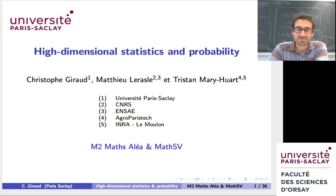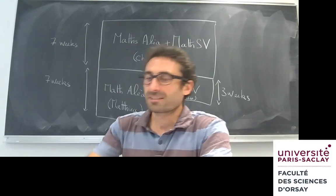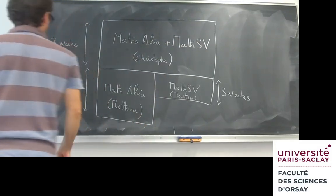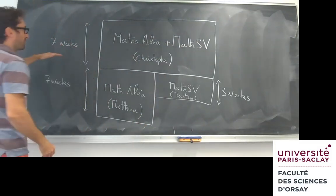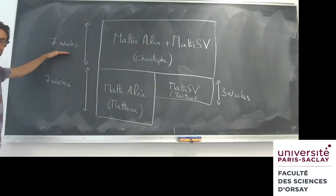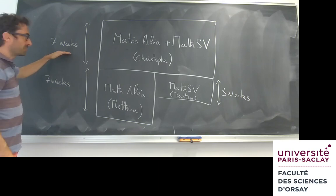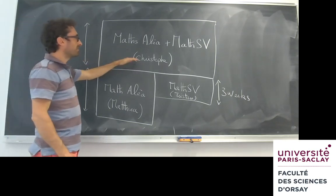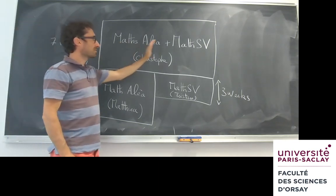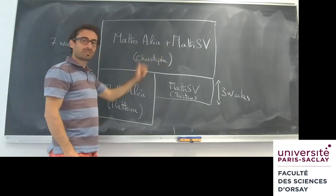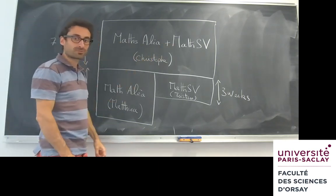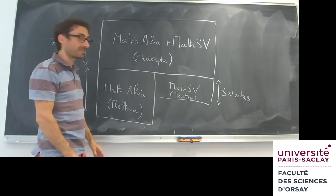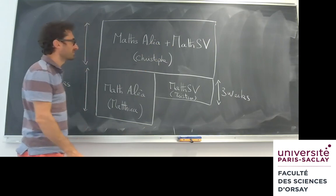and this is a joint course between the master programme Mathématiques de l'Élatoire and Mathématiques Poisson du Vivre. Let me explain to you how it works. The first part of the course is for seven weeks, and I do it myself. This is a joint part between both master programmes.